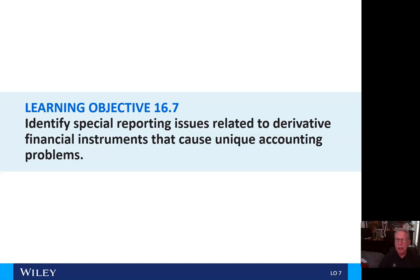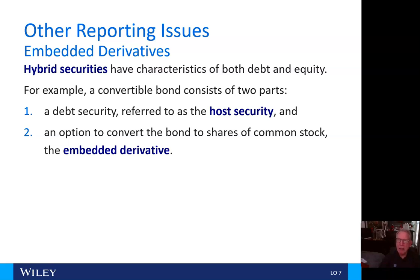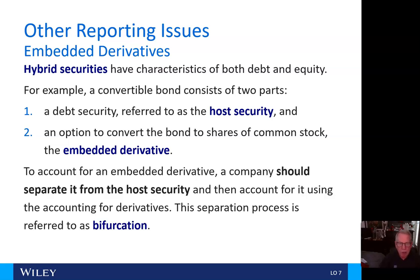Now we'll take a look at identifying special reporting issues related to derivative financial instruments that cause unique accounting problems. Under other reporting issues, we'll talk about embedded derivatives. Hybrid securities have characteristics of both debt and equity. For example, a convertible bond consists of two parts: a debt security referred to as the host security, and an option to convert the bond to shares of common stock, which is the embedded derivative. To account for an embedded derivative, the company should separate it from the host security and then account for it using accounting for derivatives. This separation process is referred to as bifurcation.